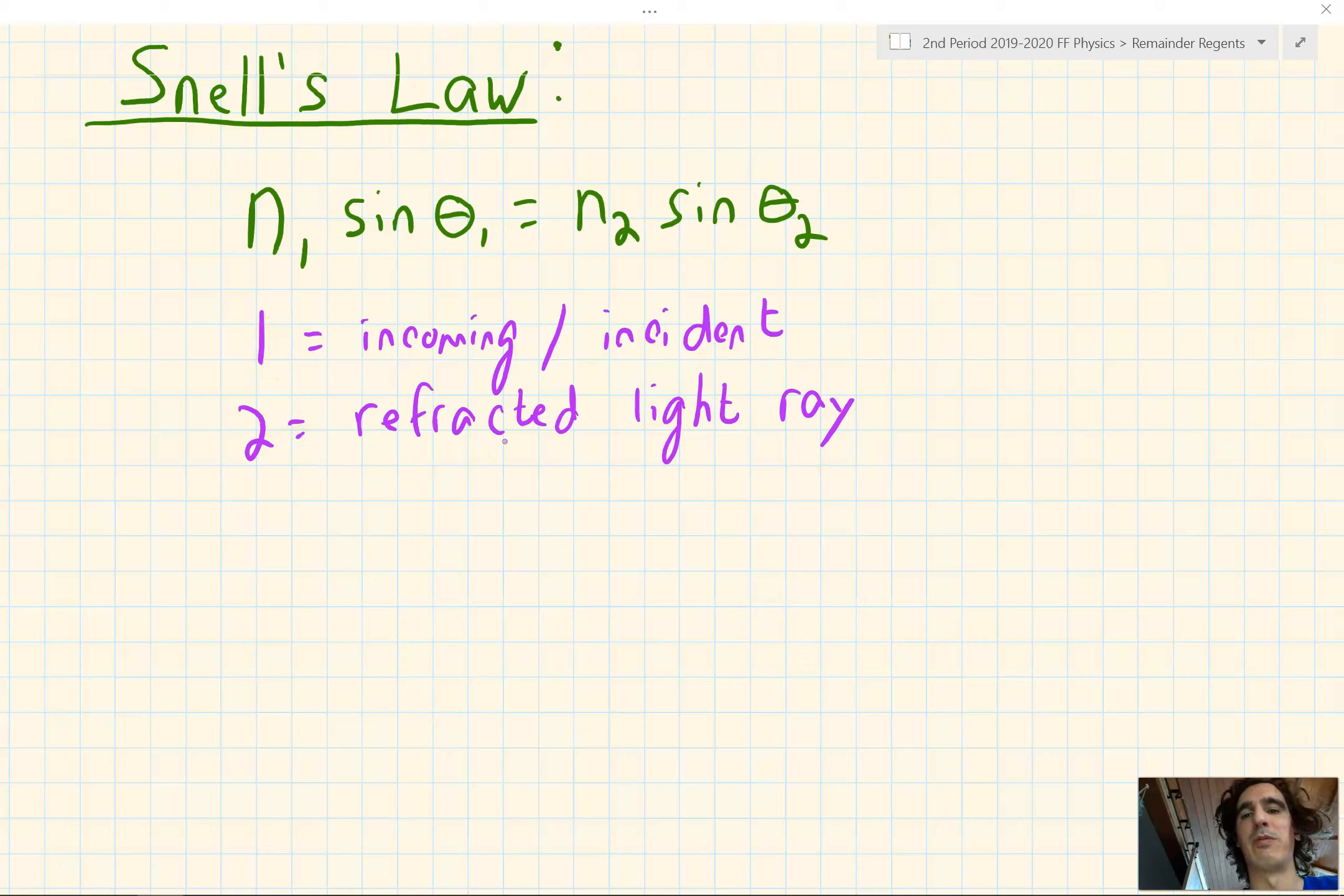Based on the formula, it doesn't matter which one we choose. But for now, we'll say 1 is incoming, 2 is refracted. Then lastly, theta represents the angle, and it's relative to the normal. So angle relative to normal.